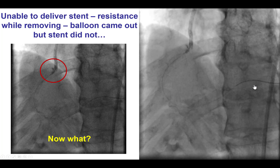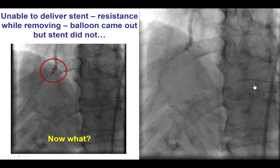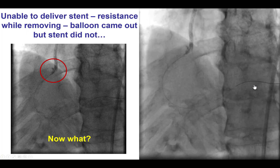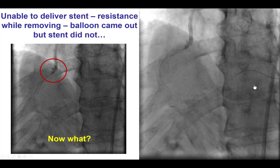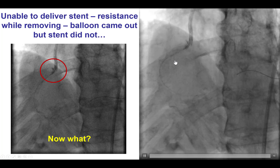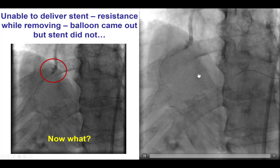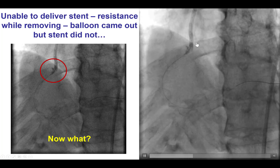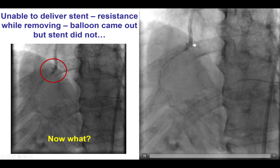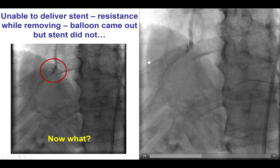However, while attempting to deliver a stent, we had difficulty delivering it past the proximal right coronary artery, and also had difficulty retrieving it back into the guide. Eventually, the balloon came back, but once we looked at the balloon that came up, it did not have the stent, and the stent was actually crumbled at the distal edge of the guiding catheter.